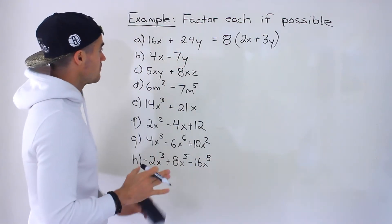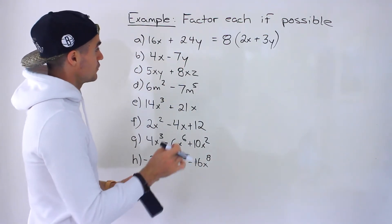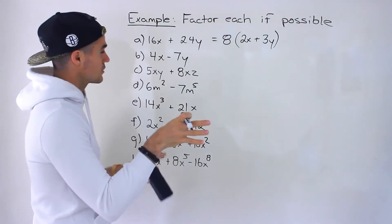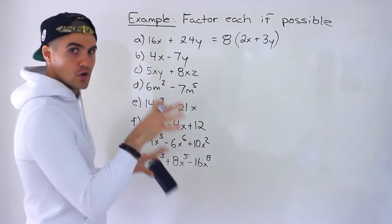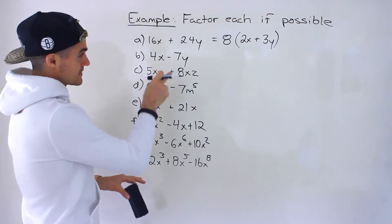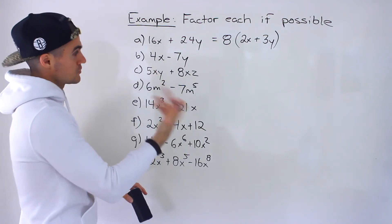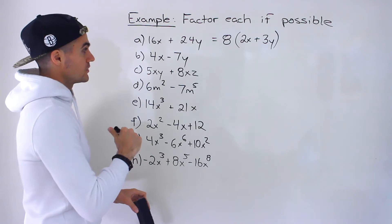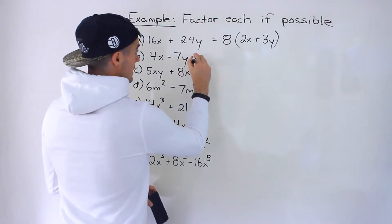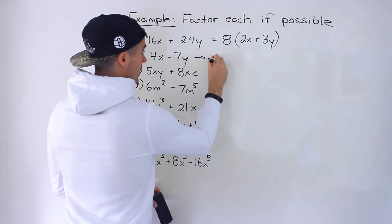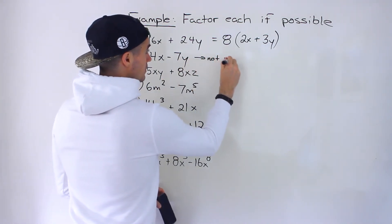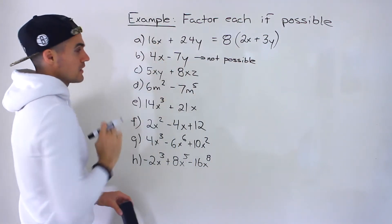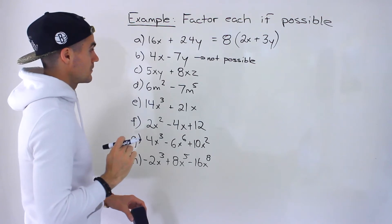That's the answer to part A. Part B: 4x minus 7y. Starting with the numbers 4 and 7 — is there a greatest common factor? No, there isn't. And x and y are different variables, so we can't factor out any variable either. So it's actually not possible to factor that expression.